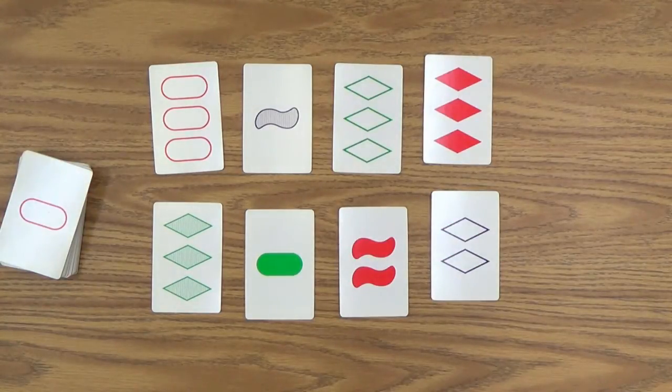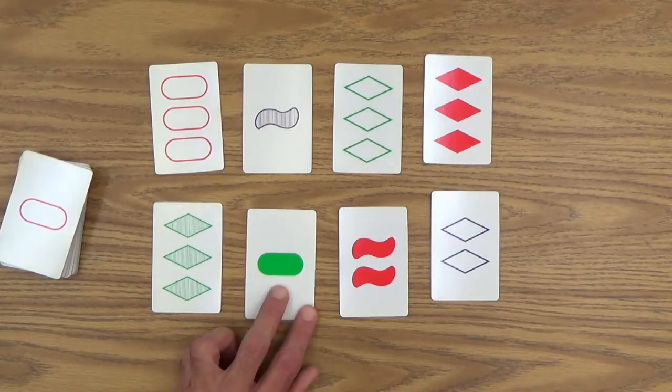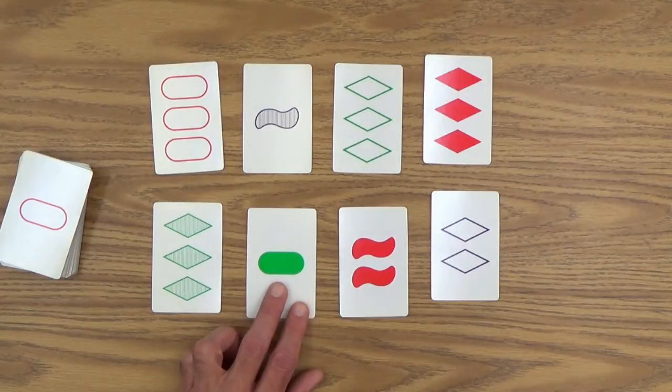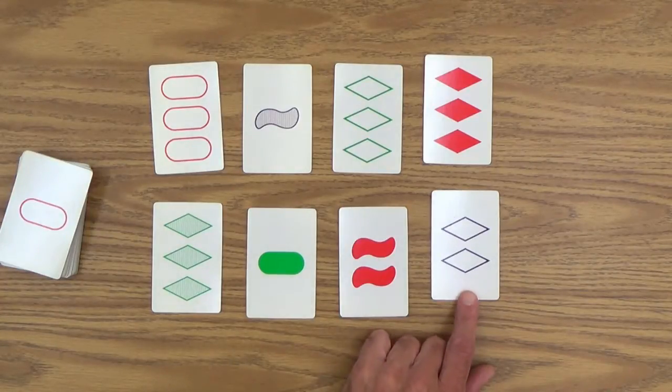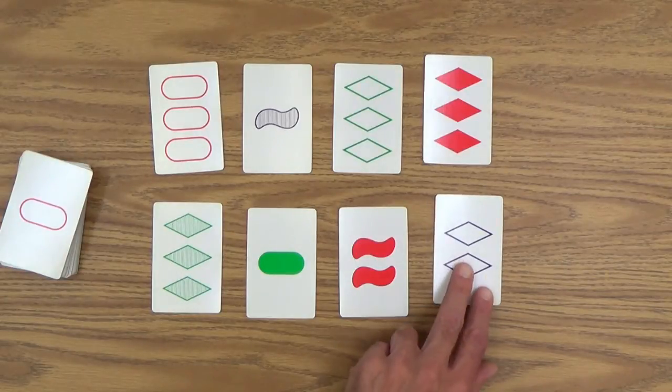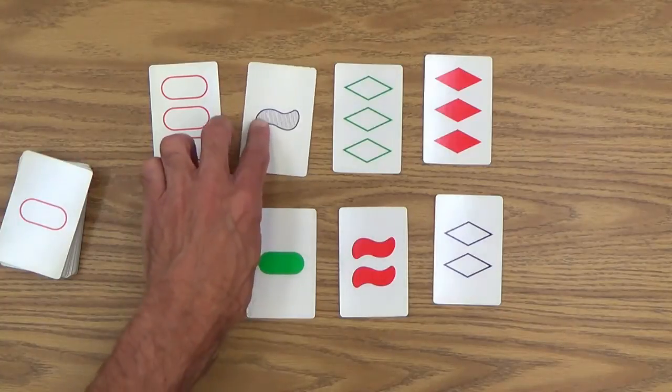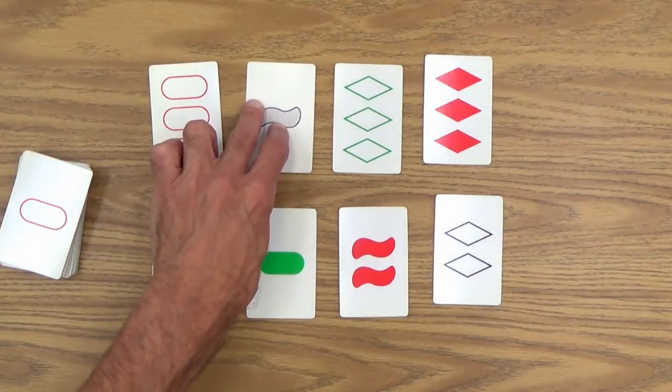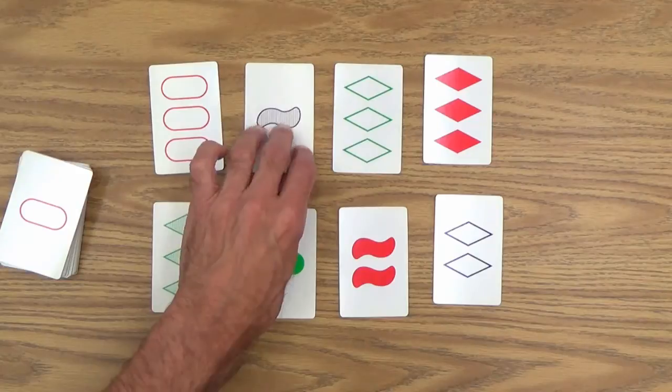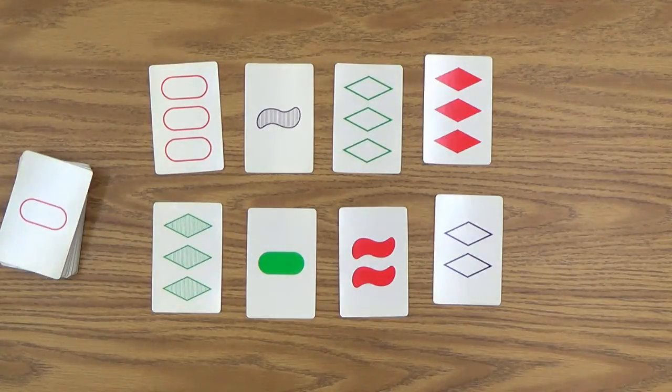And finally, there is a shading attribute. The symbols are either what I call solid or filled in. They could be, I call this clear or you could call it outlined. I like to call it just clear. Or we have cards that also have striped shading.